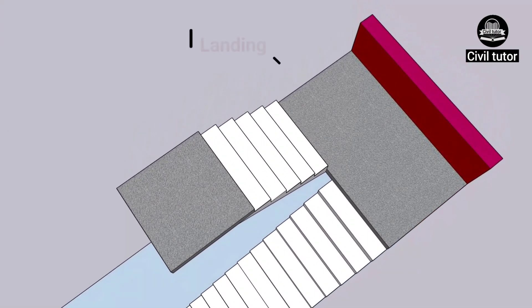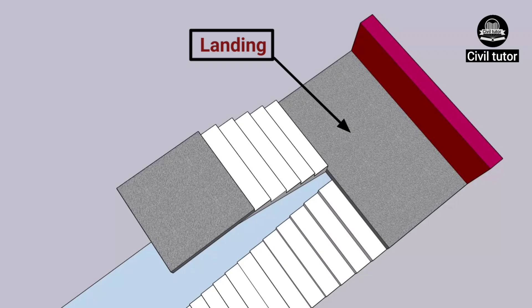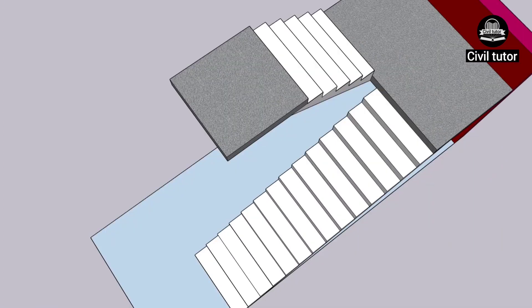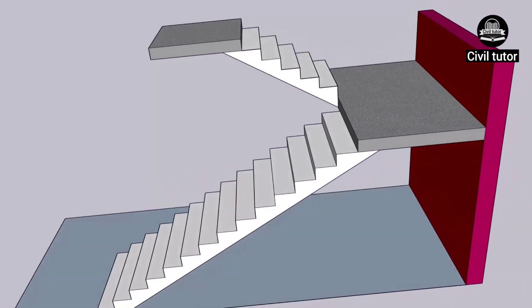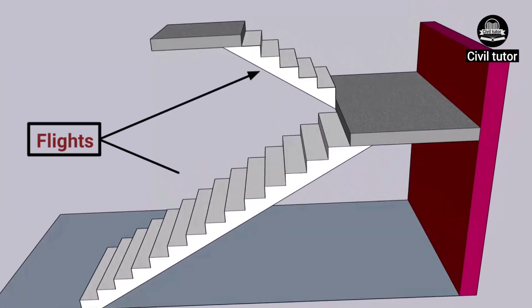The horizontal platform which is provided between two successive flights in a staircase is known as landing. Flight is the continuous series of steps without any break between landings or between landing and flooring.